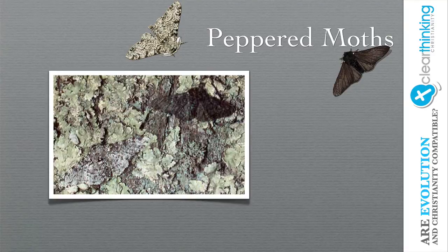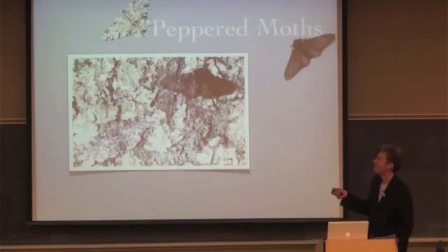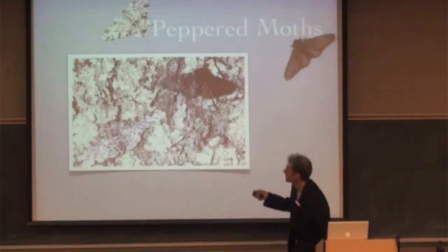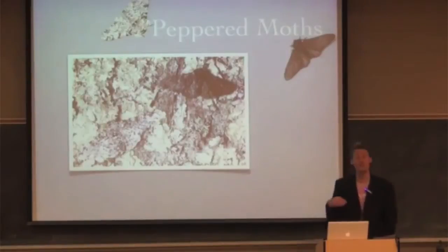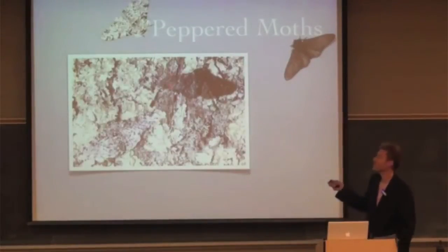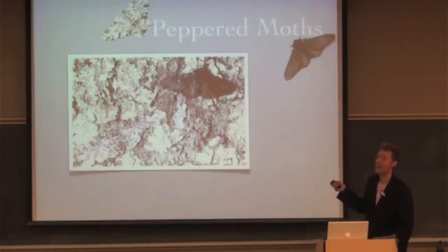What happened is, there were these peppered moths, and they would land on these trees. The trees were light-colored and had lichen on them. There's actually a moth right here — very hard to see.